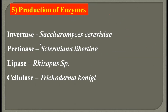The next application of microbes in industry is the production of enzymes. Enzymes can either accelerate or initiate a reaction. Invertase is produced by Saccharomyces cerevisiae, a fungus commonly called yeast. Pectinase is produced by Sclerotinia libertiana. Lipase enzyme is produced by Rhizopus species, which is a fungus. And cellulase is produced by Trichoderma. All these microorganisms have great application in the industrial production of enzymes.